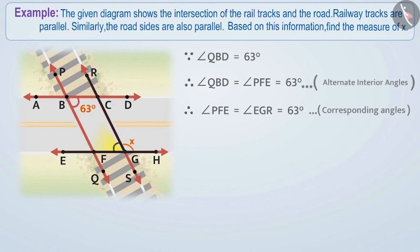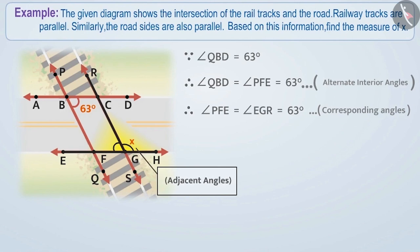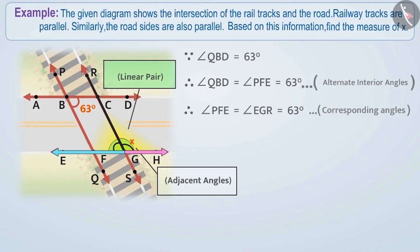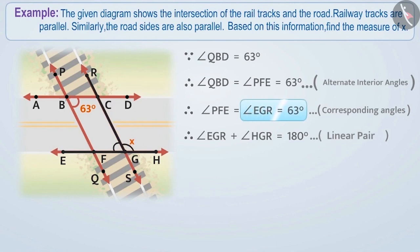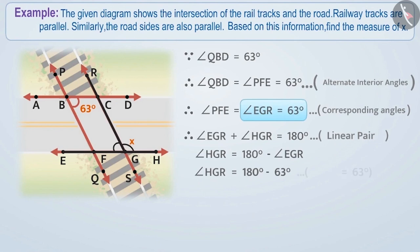As you can see, angle EGR and angle HGR are both adjacent angles, but their rays GE and GH are both rays moving in opposite directions. Therefore, the two angles together form a linear pair. That is, angle EGR plus angle HGR is equal to 180 degrees. Since we know angle EGR is equal to 63 degrees, angle HGR is equal to 180 degrees minus 63 degrees, which gives angle HGR equal to 117 degrees.